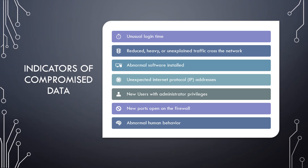Indicators of compromised data include unusual login times, reduced, heavy, or unexplained traffic across the network, abnormal software installed, unexpected IP addresses, new users with admin privileges, new ports open on the firewall, or just abnormal human behavior around the office.